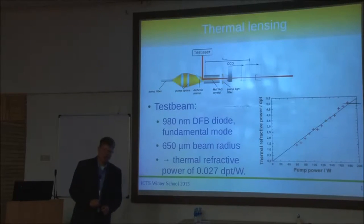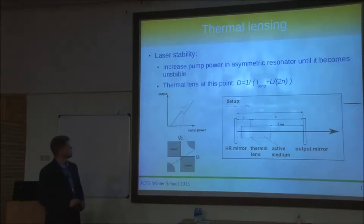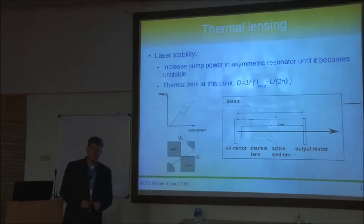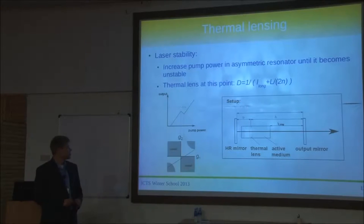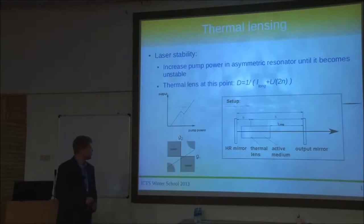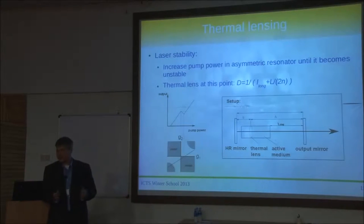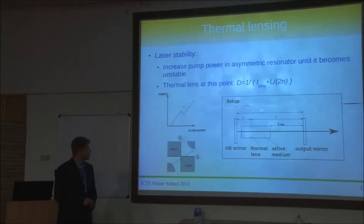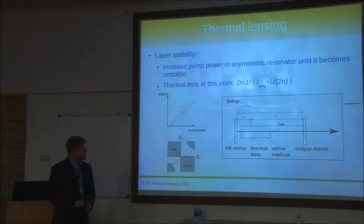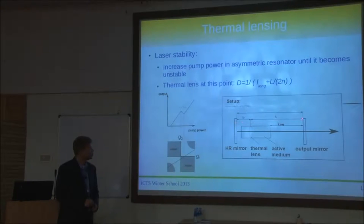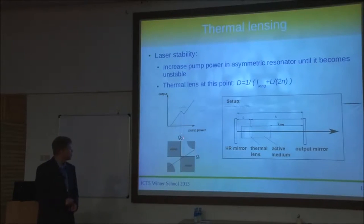My favorite method uses laser stability rather than a test laser. There are ways to look at laser stability using the G parameters, which give information on at which regions the laser is stable. They consist mainly of geometrical quantities. For a system with one crystal, two plane mirrors, and a lens in between, G₁ = 1 − L₂/f and G₂ = 1 − L₁/f. A laser is stable if the product G₁·G₂ is between 0 and 1.